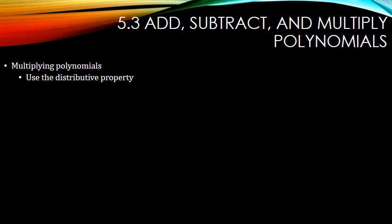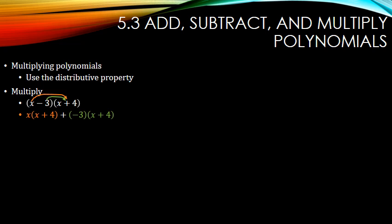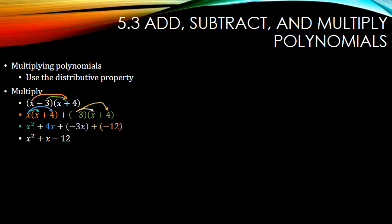To multiply polynomials, you use the distributive property. So to multiply these, I'm going to take each of the x and the negative 3 and multiply it by the x plus 4. So I have x times (x plus 4), and negative 3 times (x plus 4). I'm going to distribute each of those: x times x, x times 4, negative 3 times x, and negative 3 times 4. Combine like terms — the 4x and the negative 3x combine to make 1x.